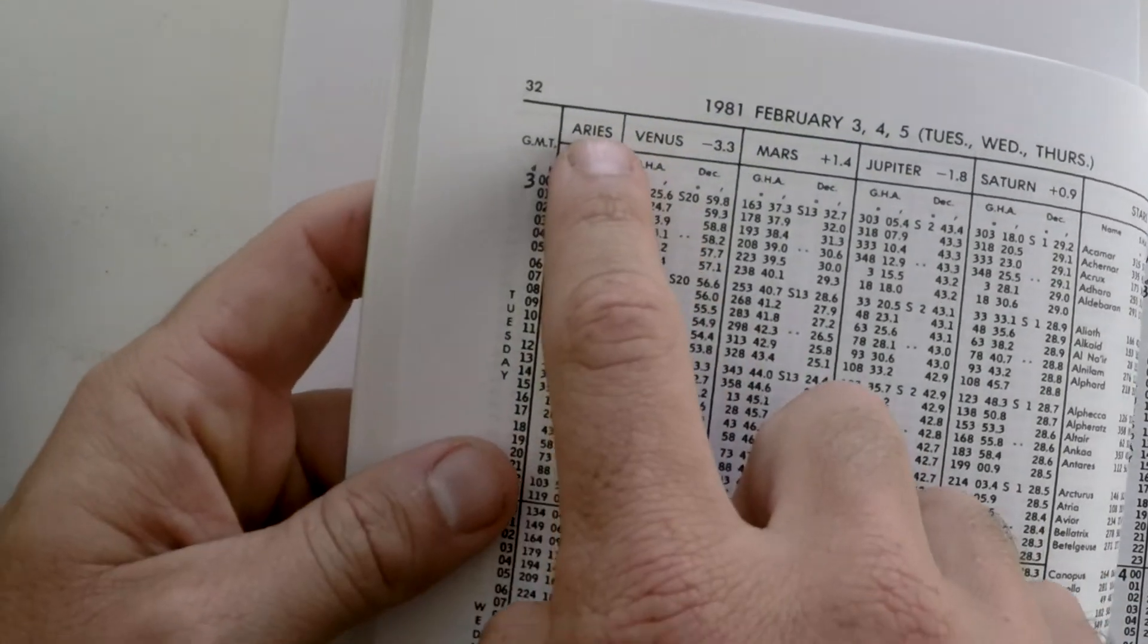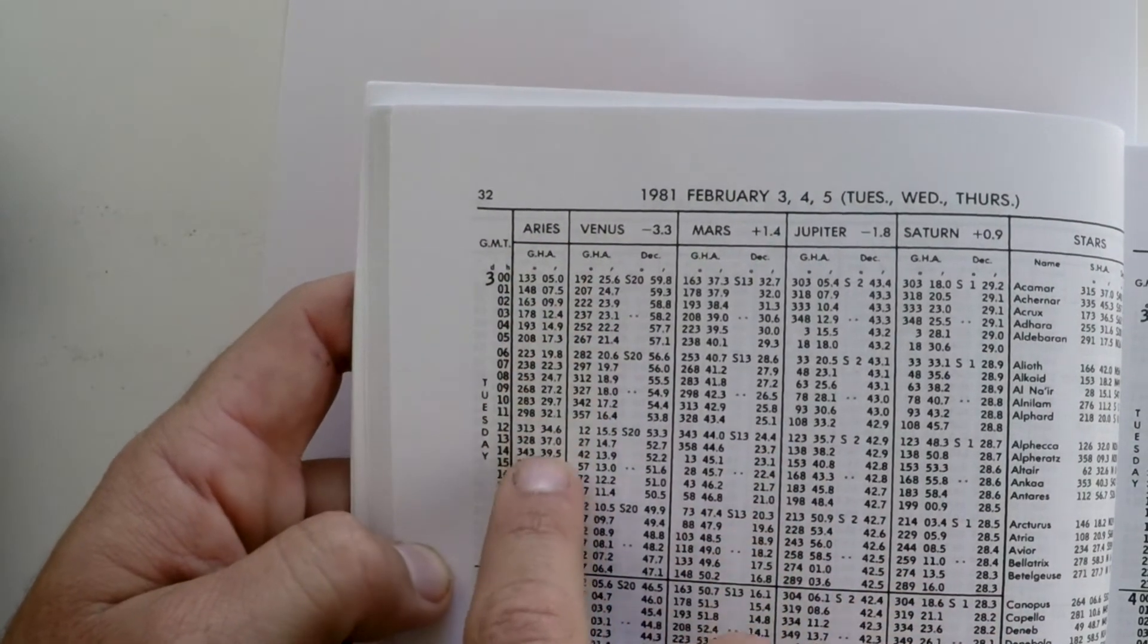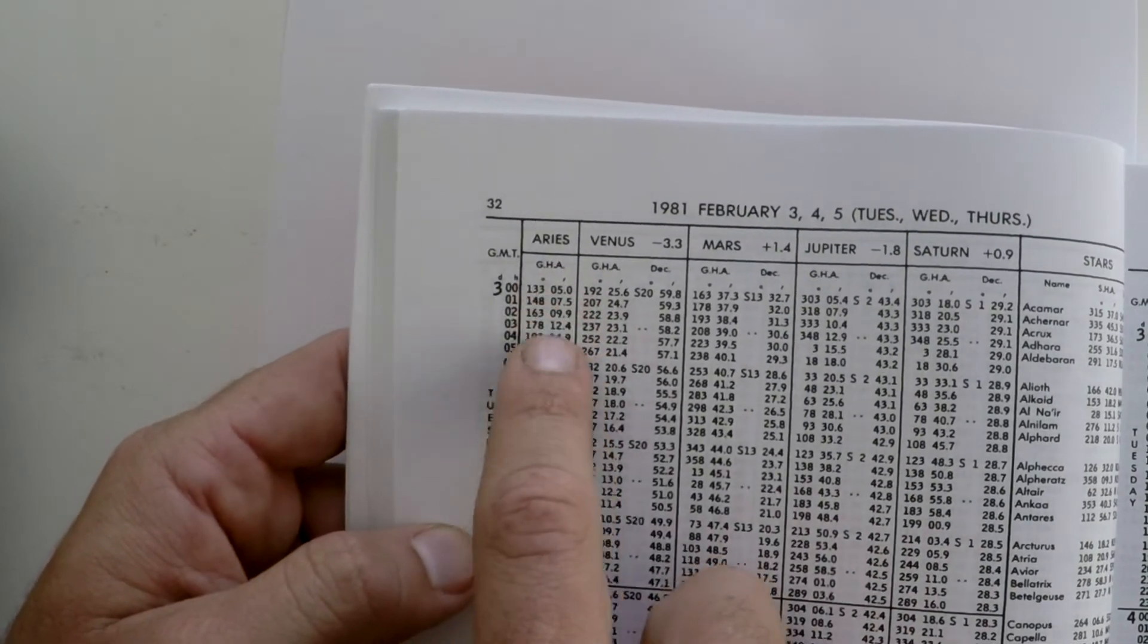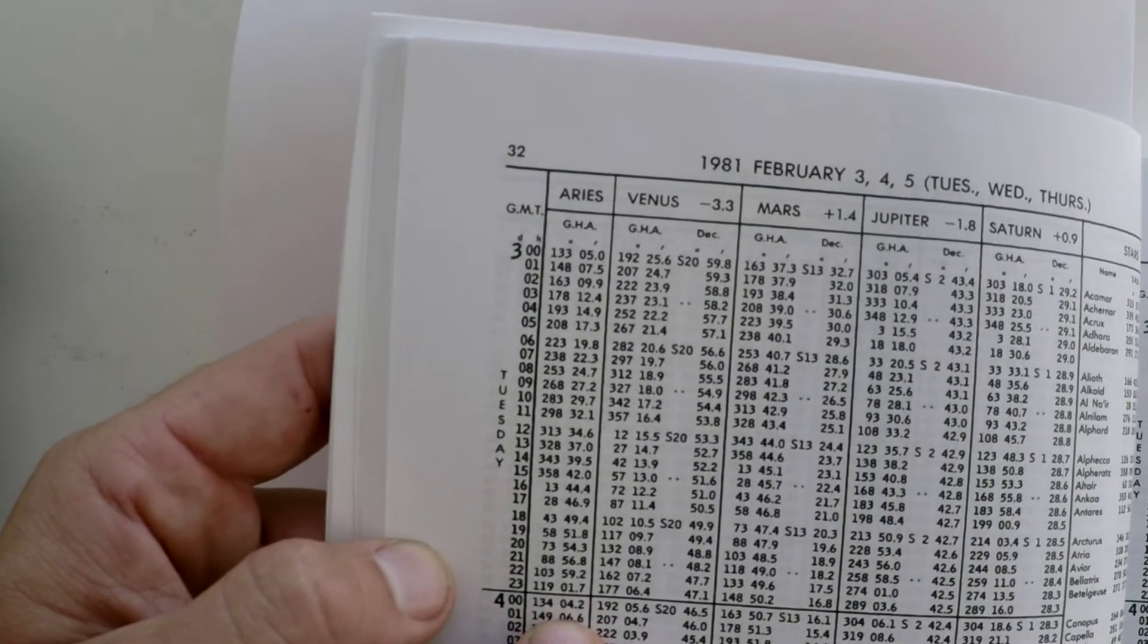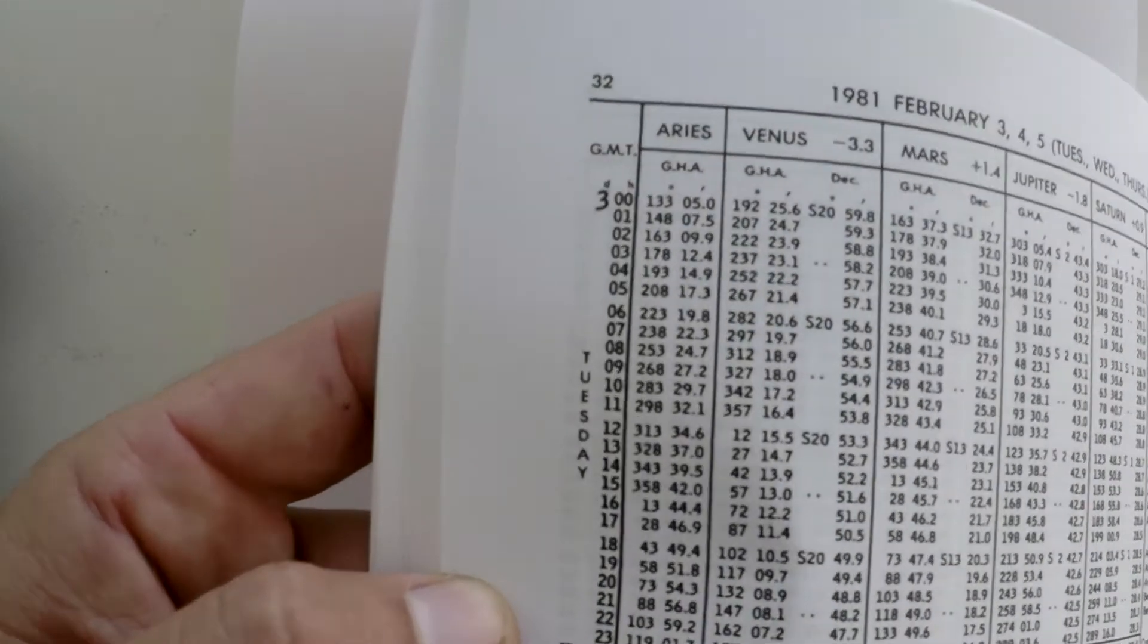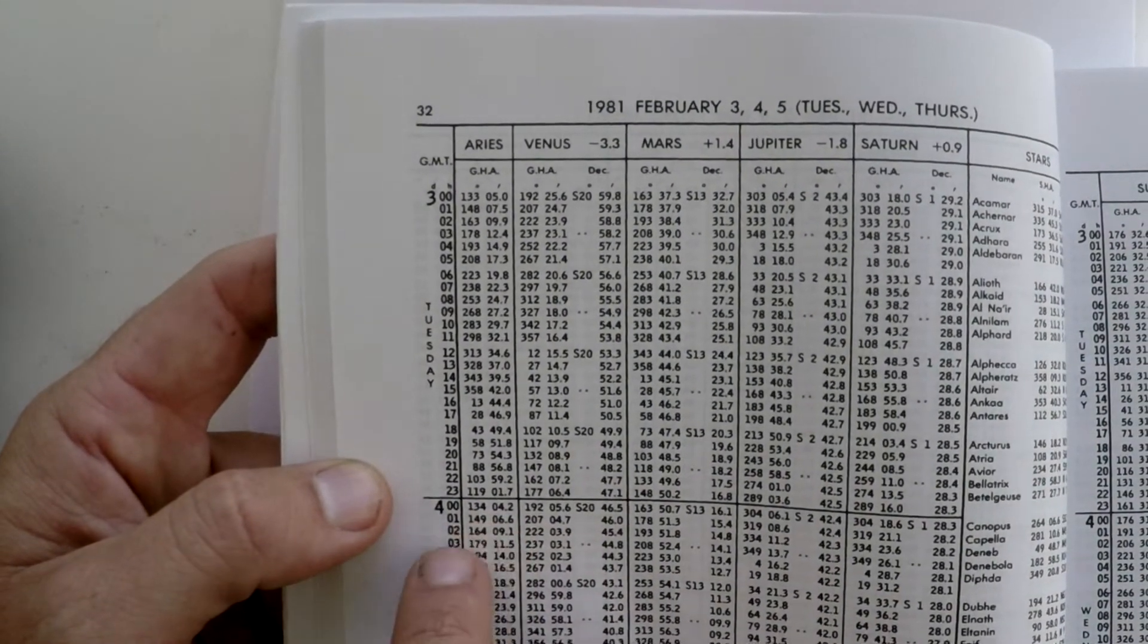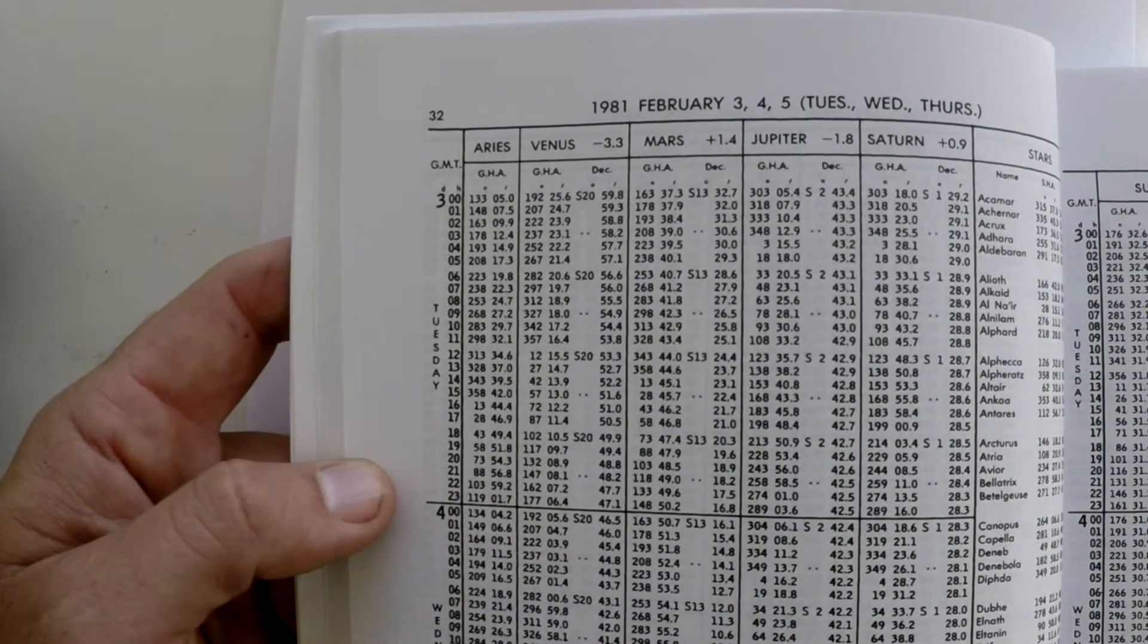The other thing that we need to know about the nautical almanac is that the GHA of Aries is listed for every hour. If we were looking for the GHA of Aries at 0100 on the 4th of February, it would be 134 degrees, 04.2 minutes. Unfortunately, it's rare that we get exact hours of GHA, so we would need to interpolate between these two.